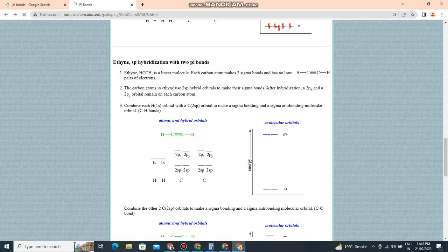The carbon atoms in HCCH can use two sp hybrid orbitals to make their sigma bonds.